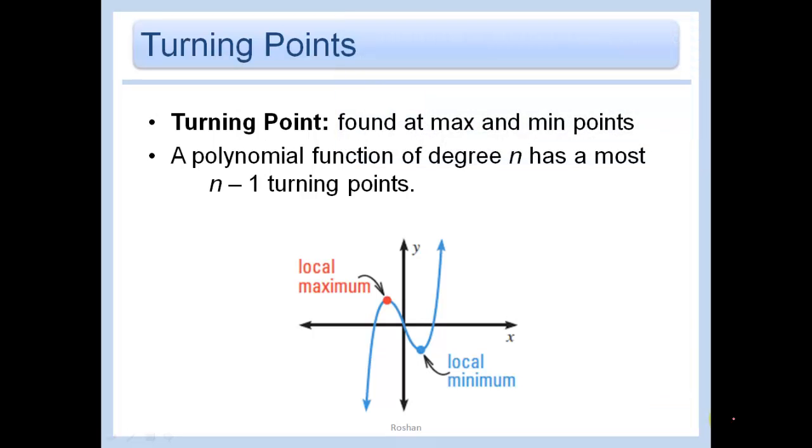Now one more piece of vocabulary that I want to give you is just turning points. Turning points are found at the max or min. So this would be a turning point and this would be a turning point. And we will notice that a polynomial function of degree n has at most, and I want to emphasize the most because it doesn't have to have exactly, but it has at most n minus 1 turning points.